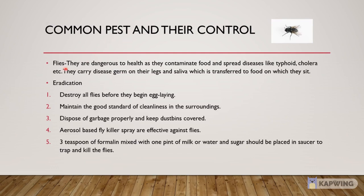The next common pest is Flies. They are dangerous to health as they contaminate food and spread diseases like typhoid and cholera. They carry disease germs on their legs and saliva, which is transferred to food on which they sit. Control methods: 1. Destroy all flies before they begin egg laying. 2. Maintain a good standard of cleanliness in the surrounding area. 3. Dispose of garbage properly and keep dustbins covered. 4. Aerosol-based fly killers available in the market are found effective. 5. Three teaspoons of formalin mixed with one pint of milk or water and added sugar should be placed in a saucer to trap and kill flies.